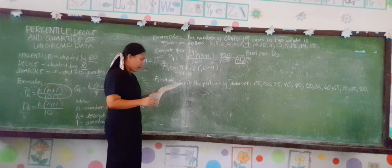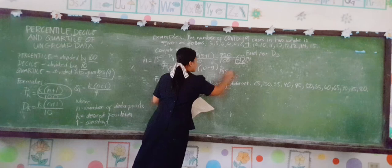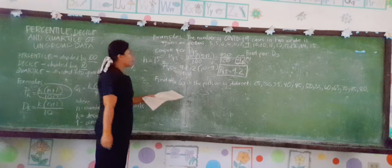Therefore, P sub 45 is at position 7.2, and P45 is equal to 9.2. That is the answer for P45.